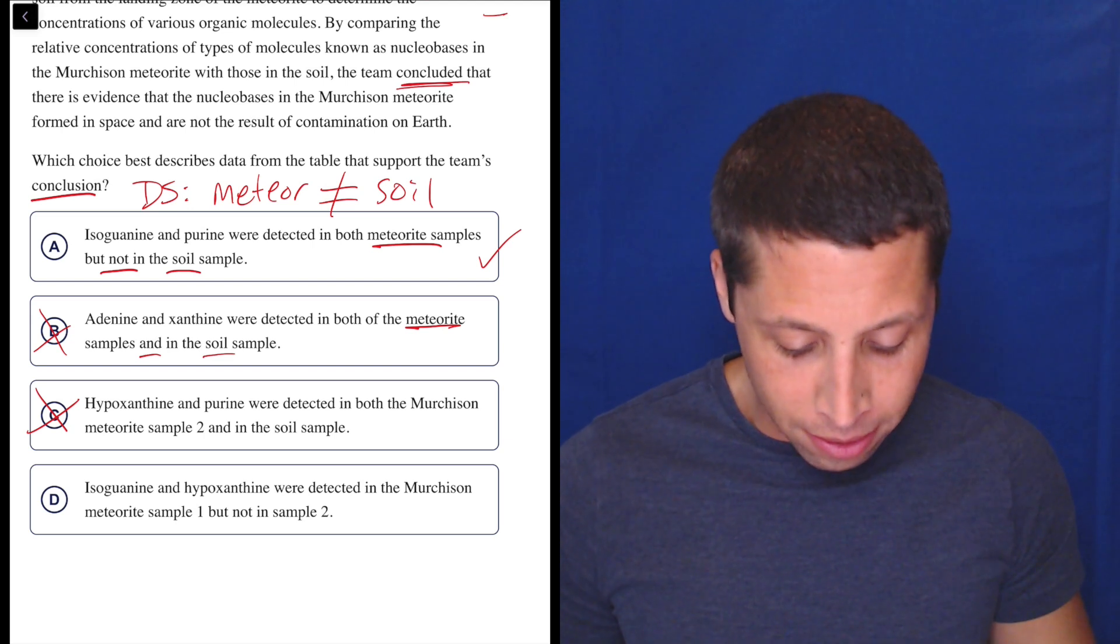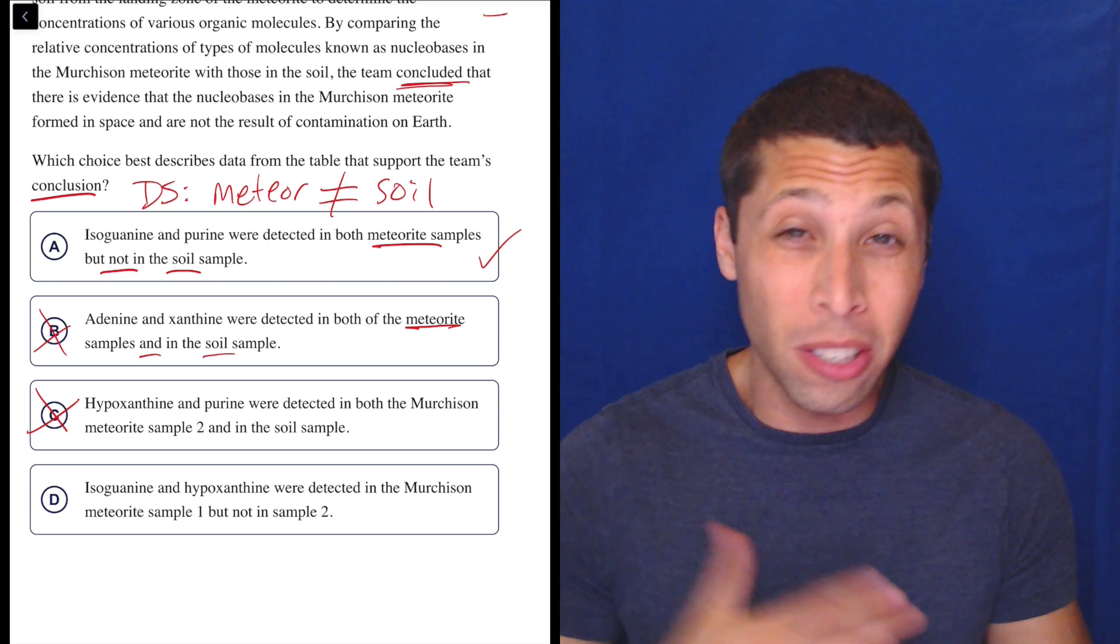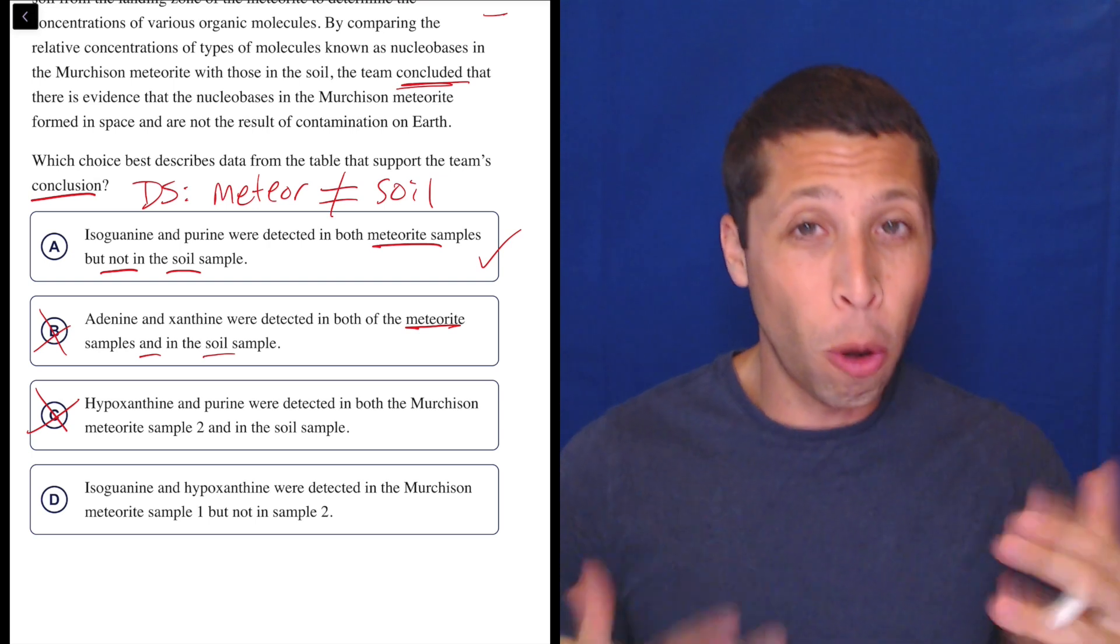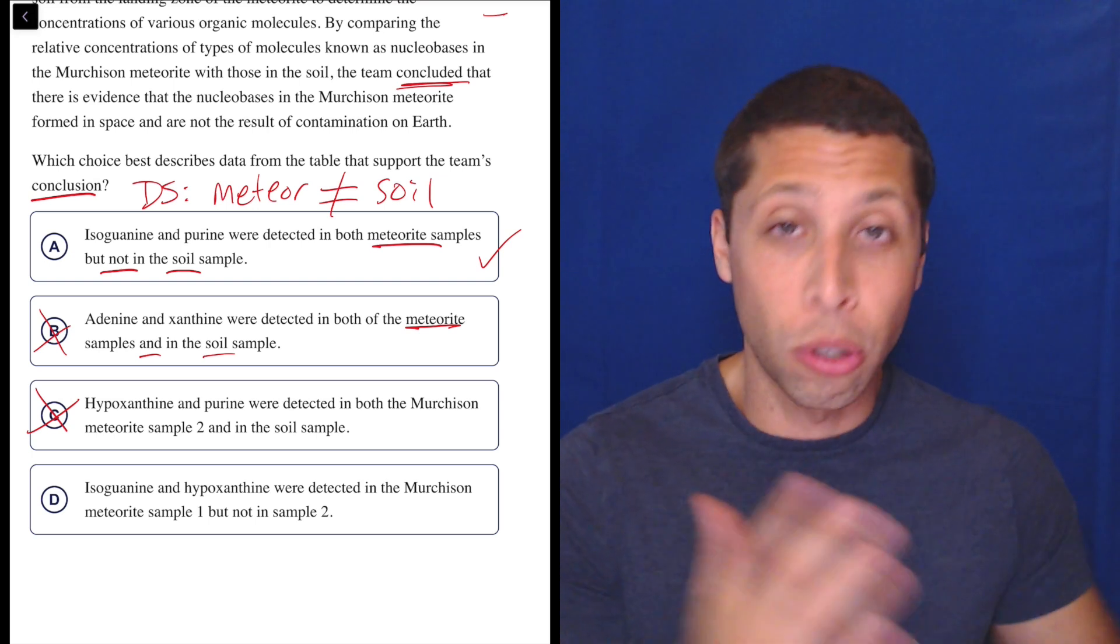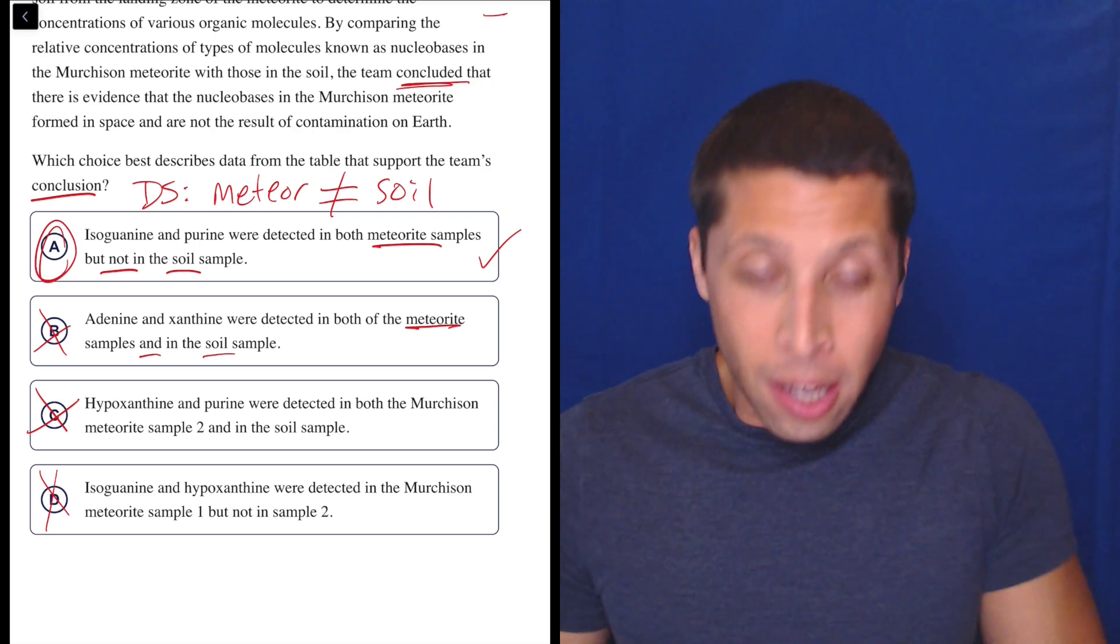D, isoguanine and hypoxanthine were detected in the Murchison meteorite sample 1 but not sample 2. Well, this is comparing the two samples of the meteorite, but the whole point is we need to compare the meteorite to the soil. So, no.